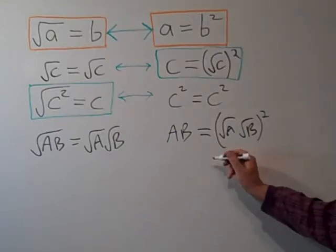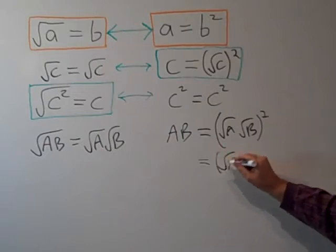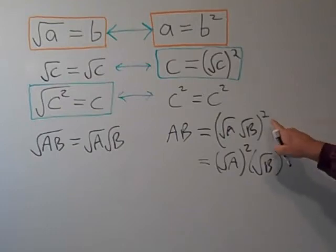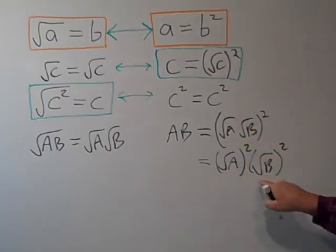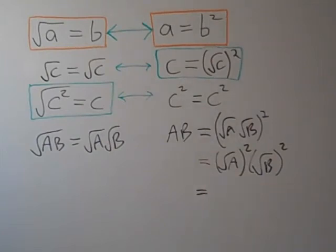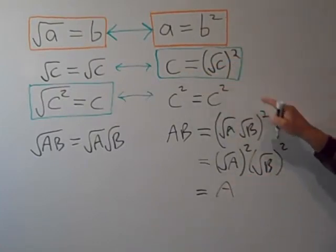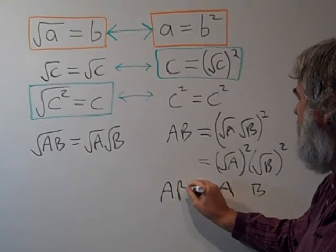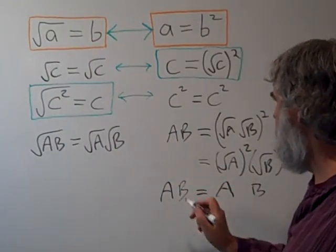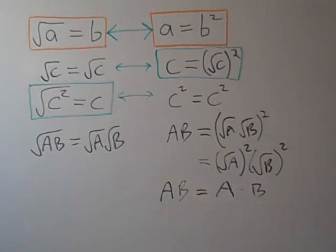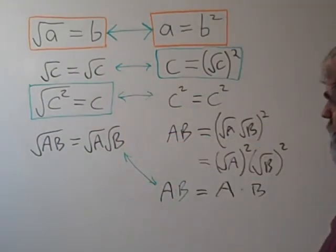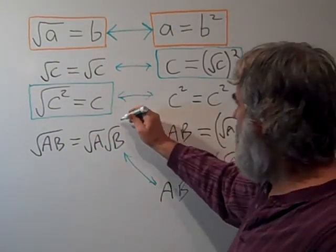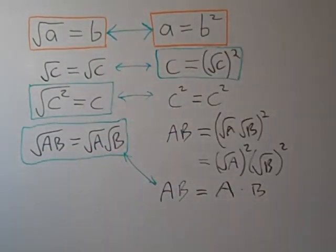Let's see if this is true. This is going to be radical A times radical A, that's radical A squared times radical B squared, using the property of squaring the product of two things — it's each factor in the product squared. The square root of A squared is A, and the square root of B squared is B. So in other words, if A times B is equal to A times B — which is obviously true for all A's and B's — then it must also be equally true that the square root of AB is equal to the square root of A times the square root of B. So there are some very important properties of square roots, and of radicals in general.